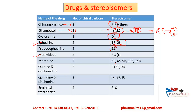When it comes to morphine, there are five stereocenters all in different configurations. For quinine and cinchonidine, which are anti-malarials, the stereoisomer configuration is 8S,9R. For quinidine — which we discussed last video as an anti-arrhythmic drug — it is the 8R,9S derivative. For erythrityl tetranitrate, there are two chiral carbons with the RS configuration.